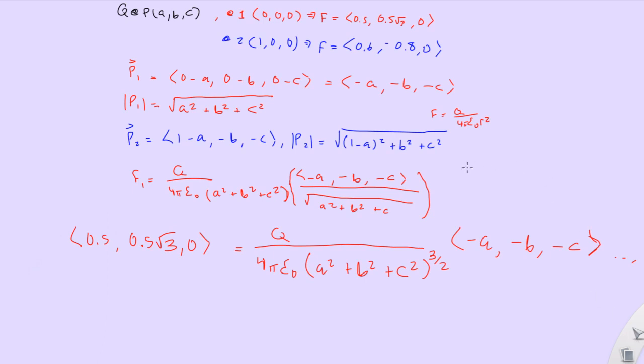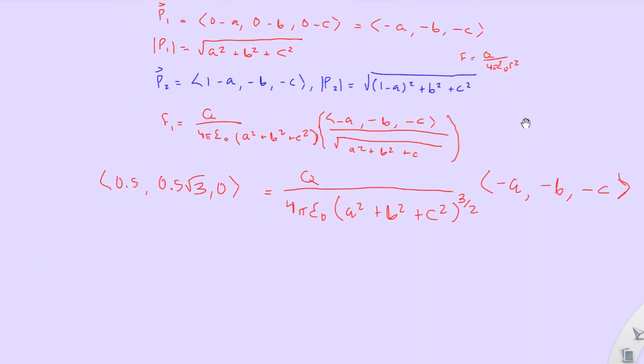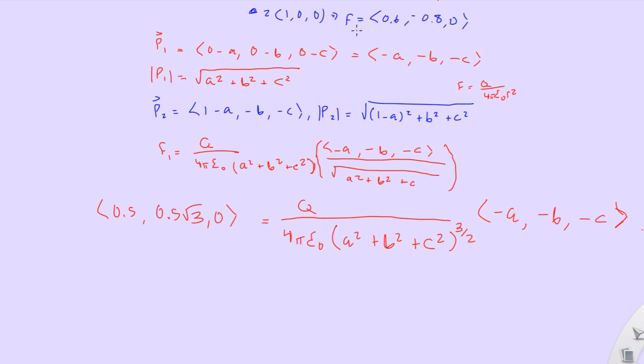Okay, so we'll do the same thing for this guy. We already know the force. The force is this guy right up here. The force of F2. This will be F2. And it's that right there. So let's write that out. Give us more space. 0.6, negative 0.8, 0.0. Okay, do this over 4 pi epsilon naught. And since I already know it's going to turn into a 3 halves, because it's going to follow the same form as this guy right up here. I'm just going to do that right off the bat. So it will be 1 minus A squared, plus B squared, plus C squared.